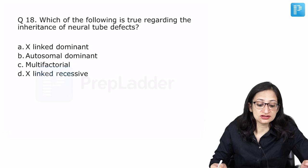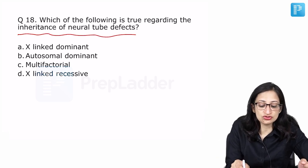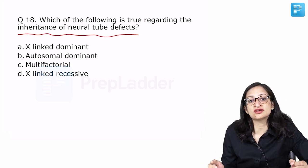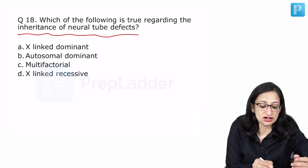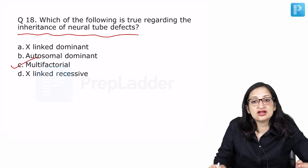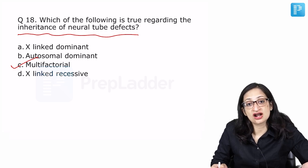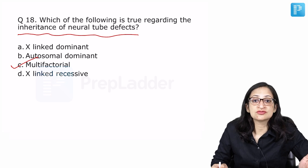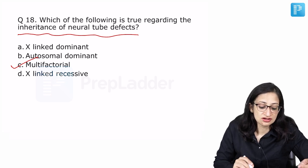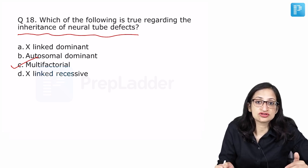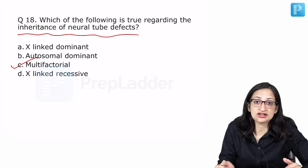Which of the following is true regarding the inheritance of neural tube defects? Neural tube defects we know do not follow any particular inheritance pattern because they have a multifactorial inheritance. They have a multifactorial inheritance and folic acid is given during pregnancy or started before conception helps in preventing neural tube defects. It does not have any of those Mendelian patterns of inheritance. It is multifactorial.